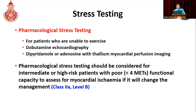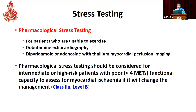Pharmacological stress testing is important especially for people who cannot exercise. We can do dobutamine stress echo and nuclear perfusion imaging with dipyridamole or adenosine stress. This is used especially in high-risk people with poor functional capacity to assess evidence of inducible ischemia.